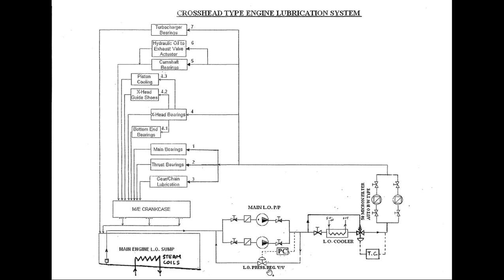The lube oil pump takes suction from the lube oil sump tank. There are two types of sumps: wet sump and dry sump. Two-stroke main engines generally have a dry sump, which is a separate tank outside the engine. A wet sump is where the oil sits below the piston in the under-piston space, as seen in generator engines with splash lubrication.